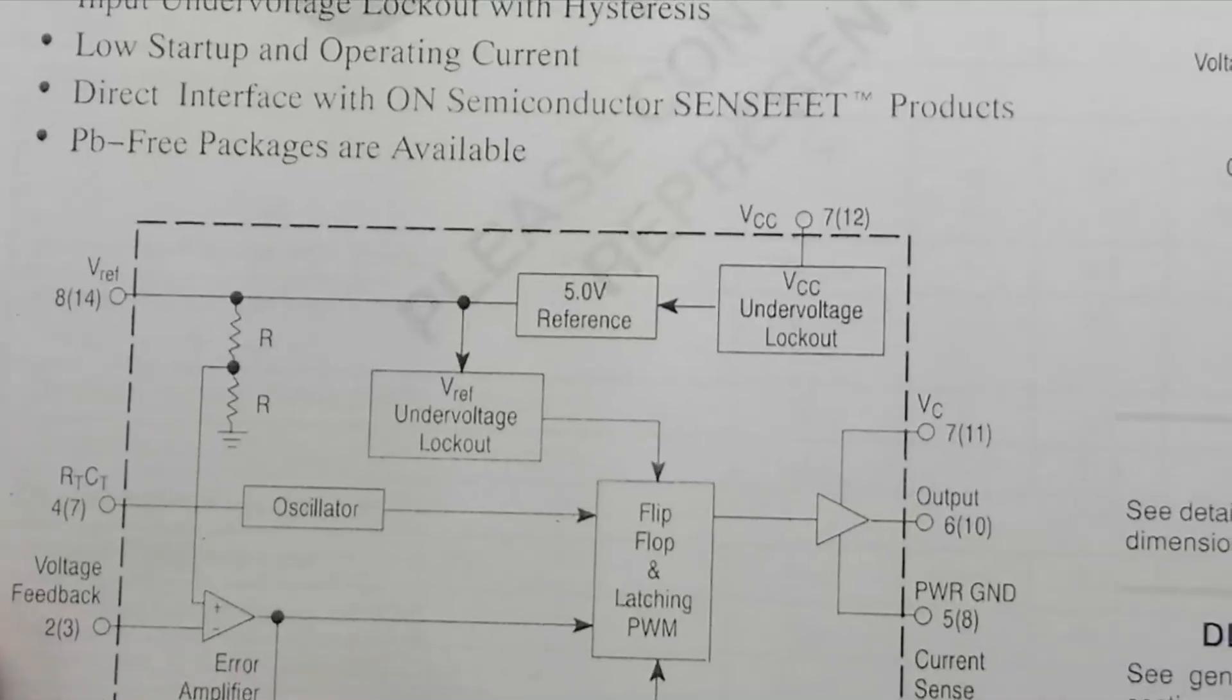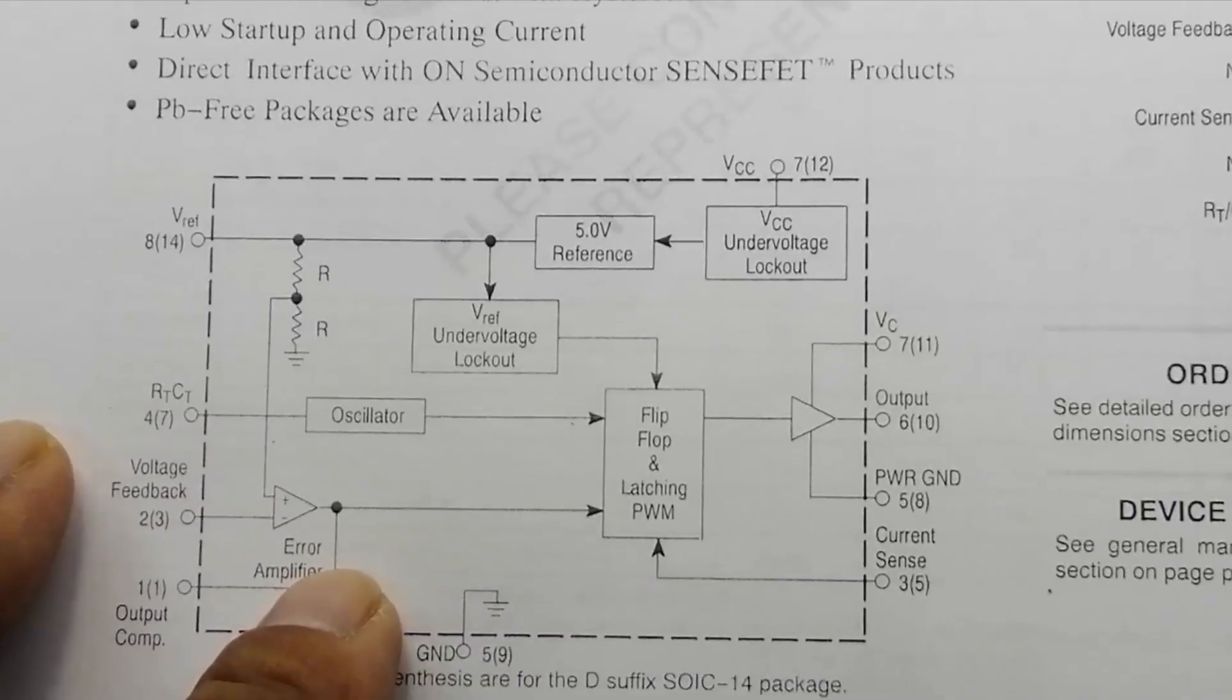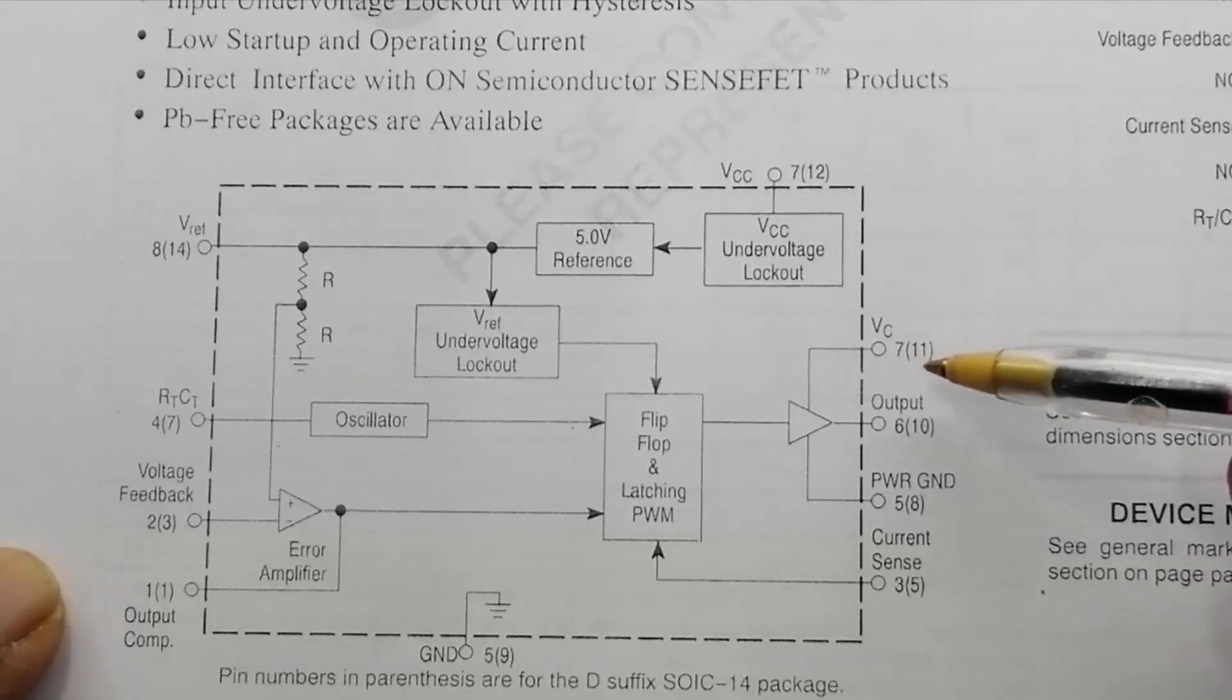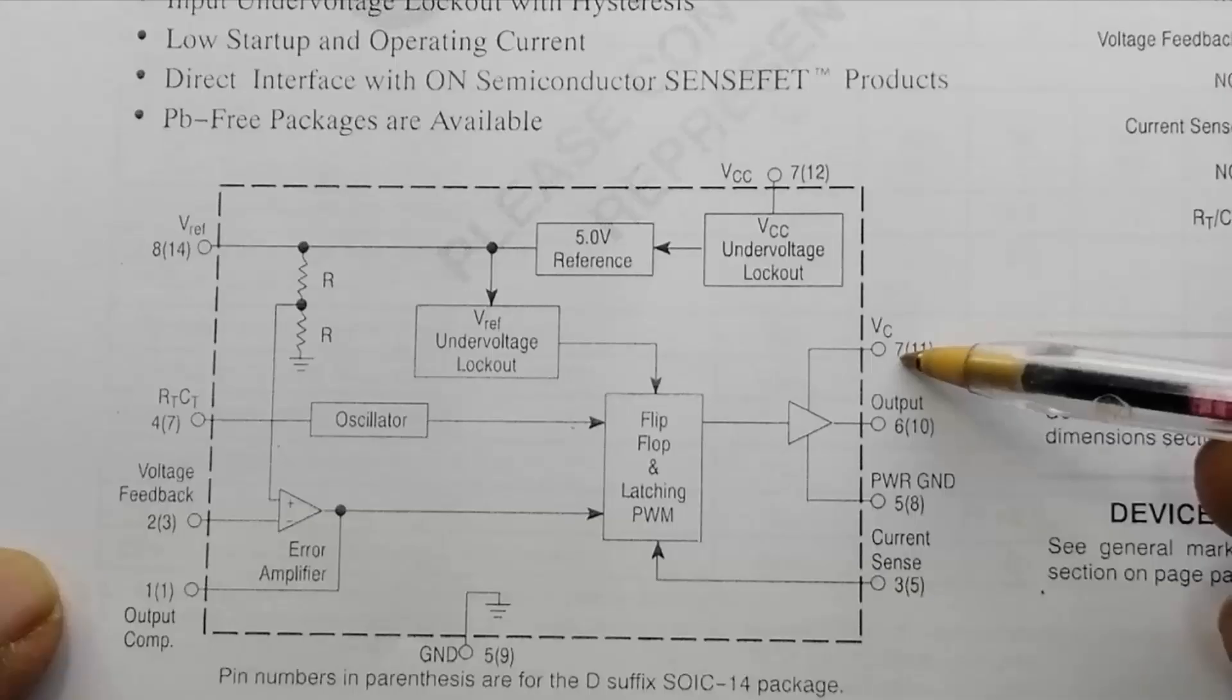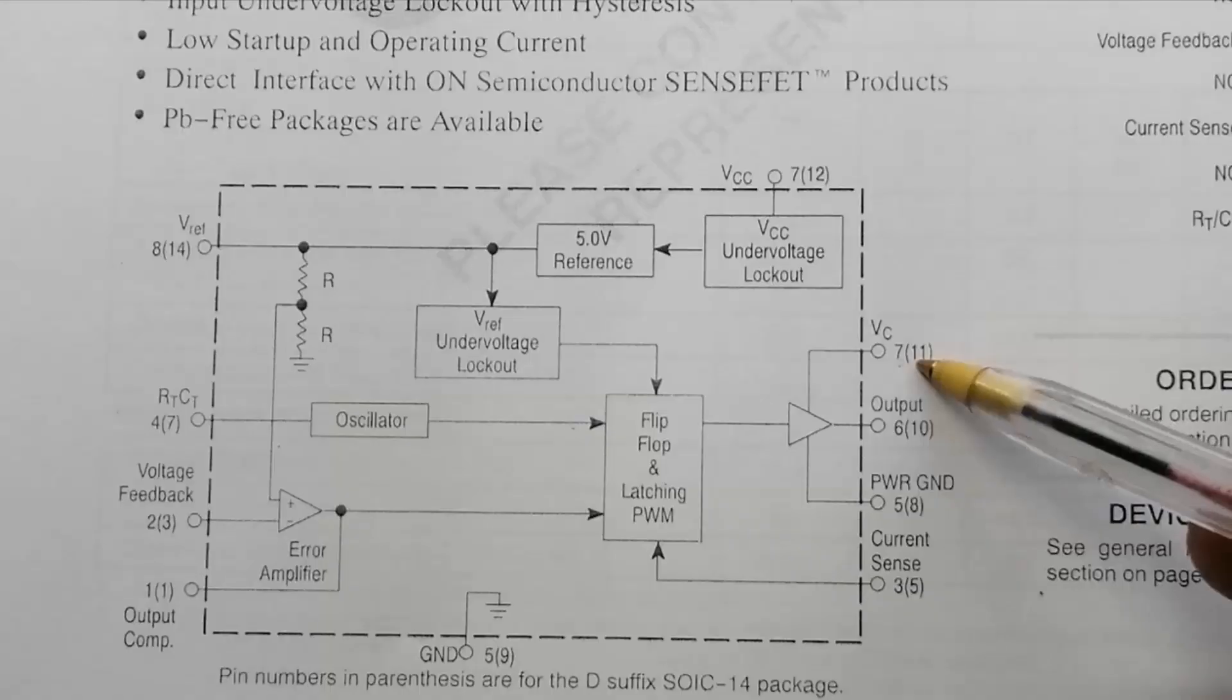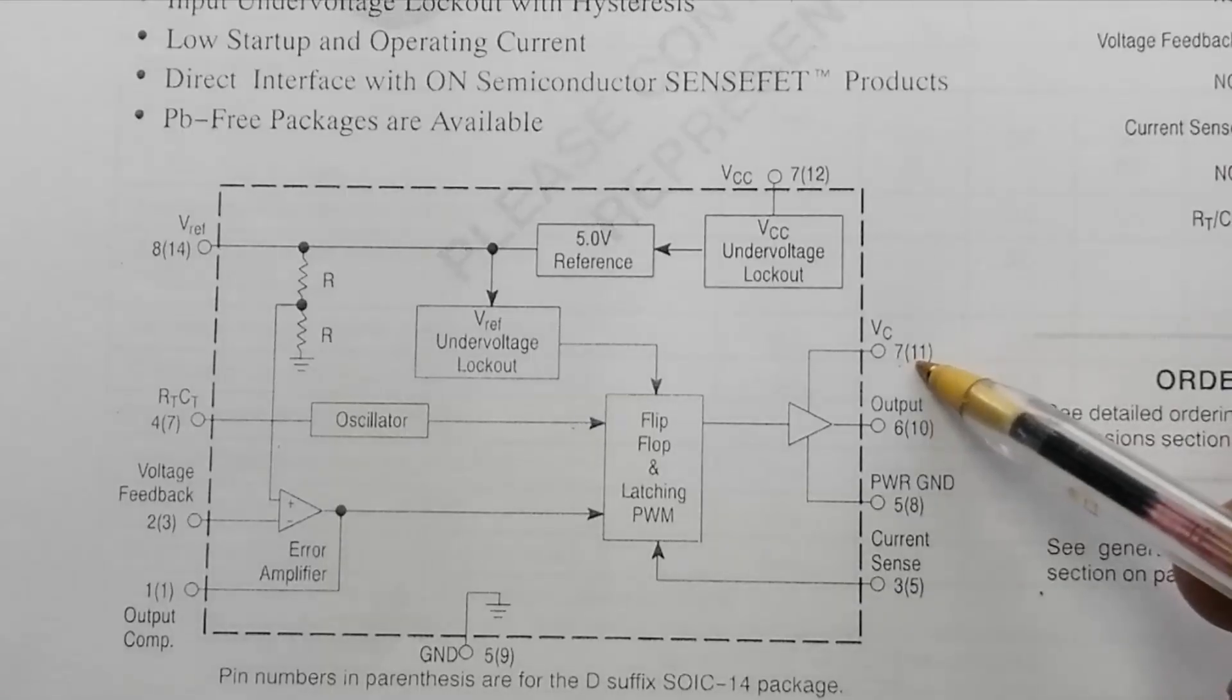Here is mentioned the pin numbers. If you are using 8-pin, then we will use the outer numbers. These outer numbers, this 7 means 8-pin IC. If you are using 14-pin, then you will consult pin number 11. So 7 and 11.